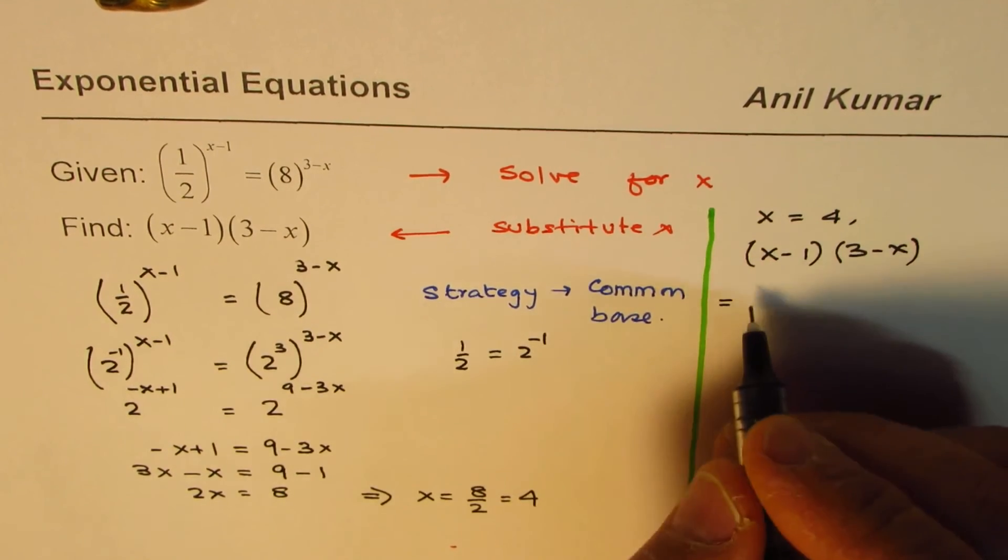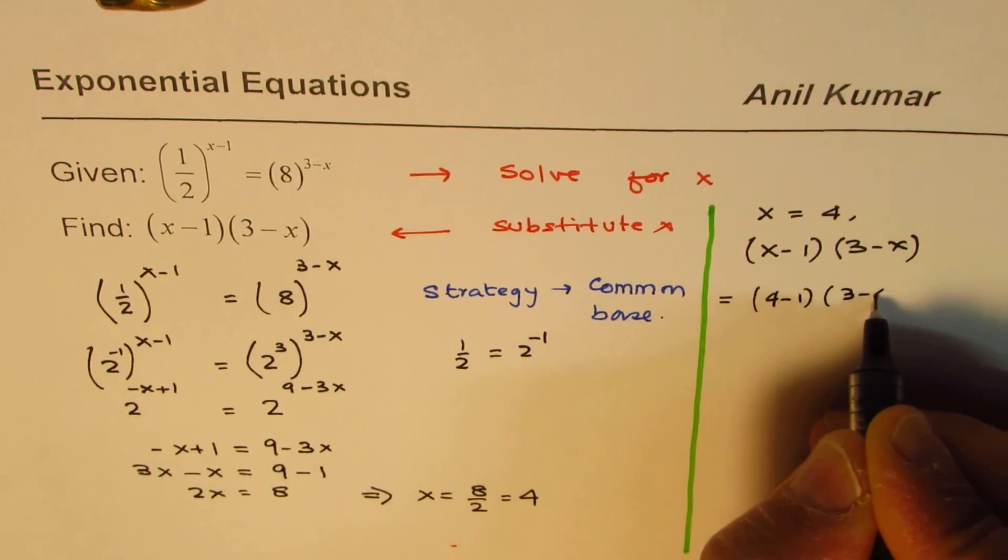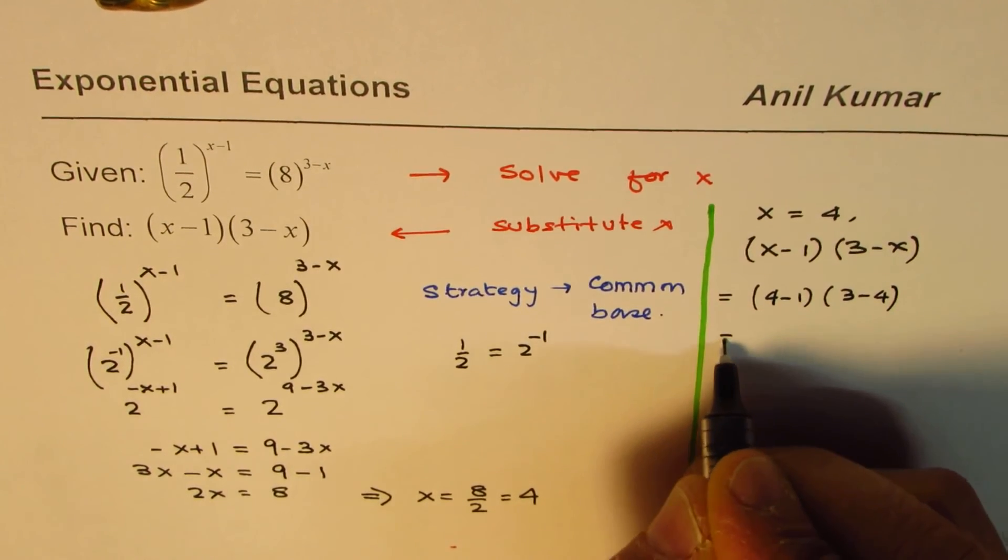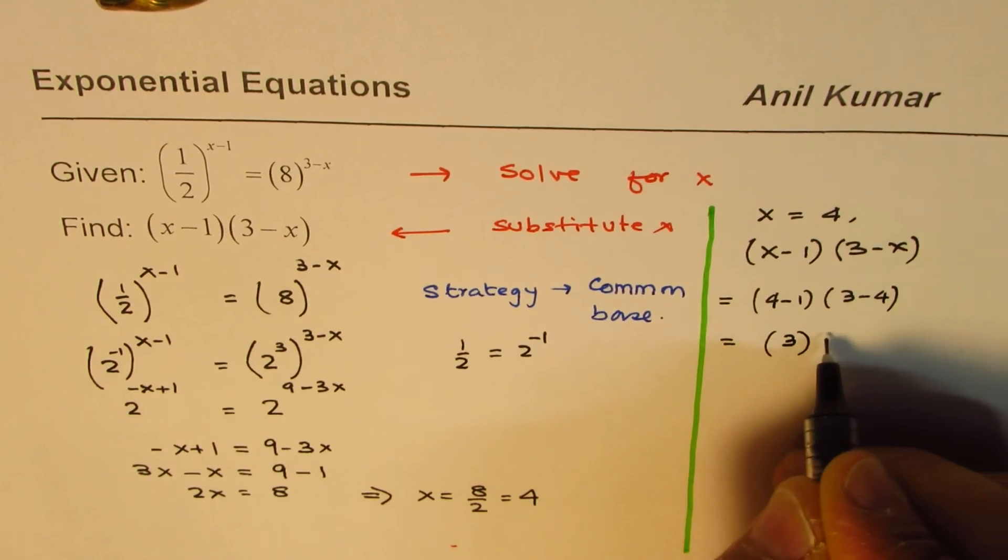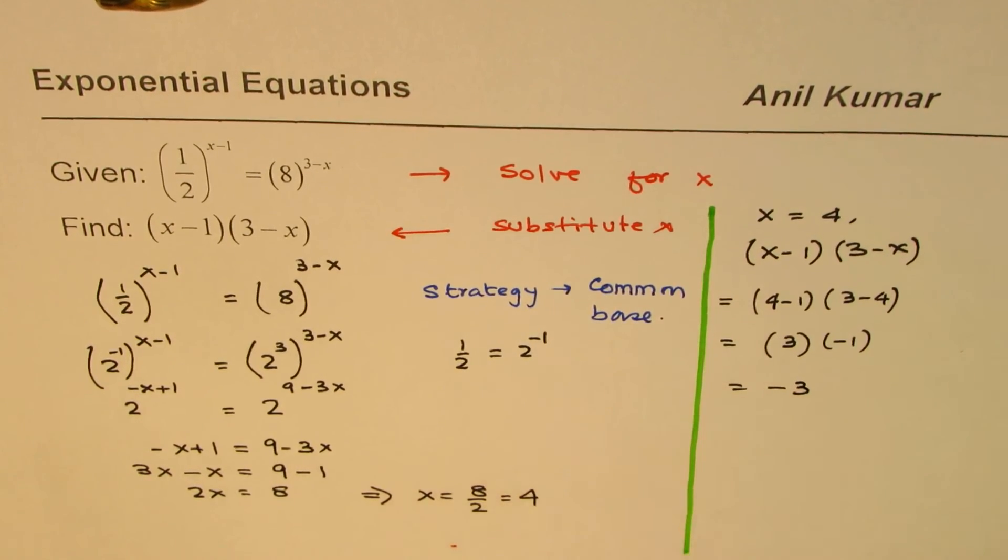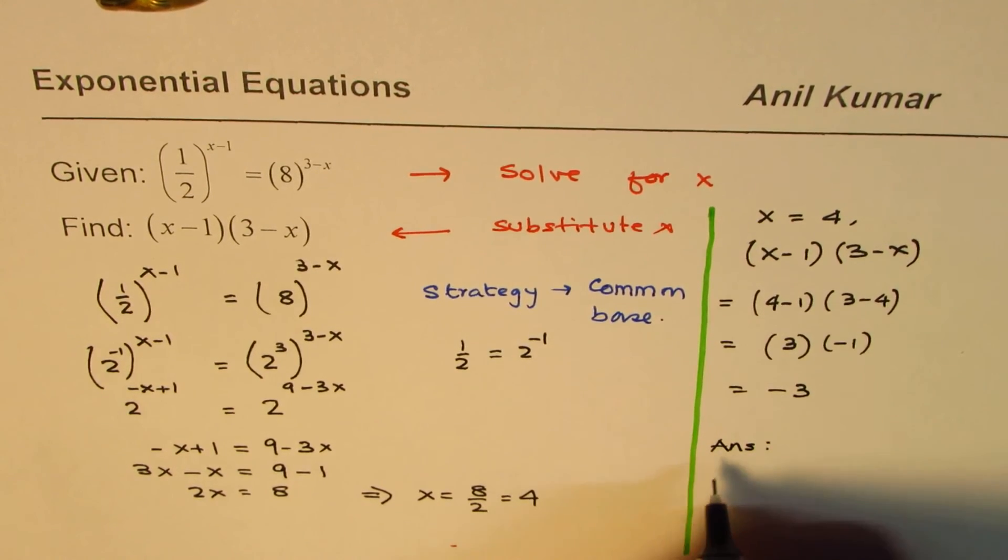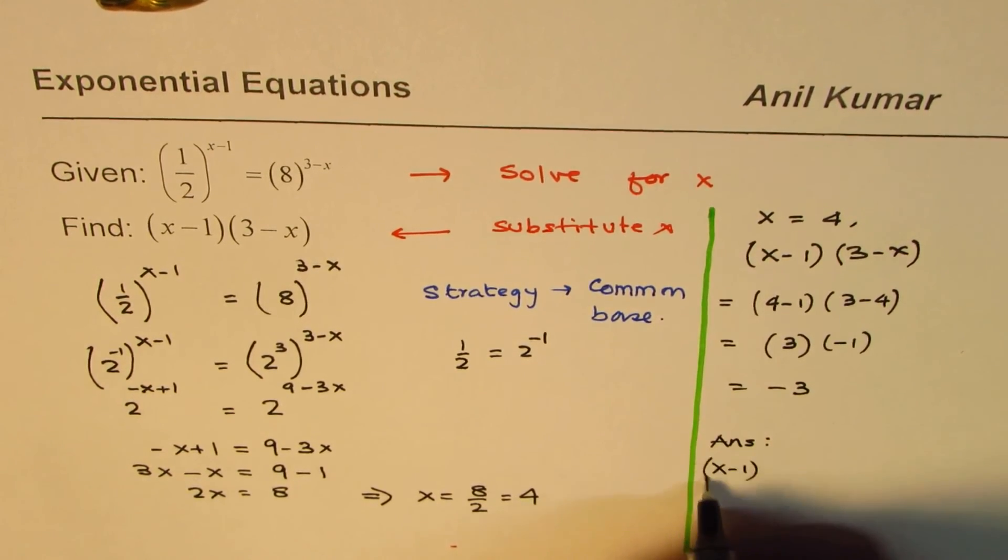So now we'll substitute 4 here. So we get (4-1) times (3-4). 4-1 is 3, 3-4 is -1, and that gives you -3 as your answer. So we can write down our answer, which is (x-1) times (3-x) = -3. Okay, so that is how it can be solved.